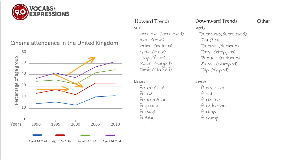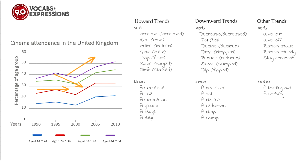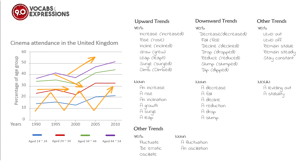For other trends, we use these verbs: level out, level off, remain stable, remain steady, and remain constant. And for nouns: a leveling out and a stability. For the last trend, we can use these verbs: fluctuate, be erratic, oscillate. And for nouns: a fluctuation and an oscillation.